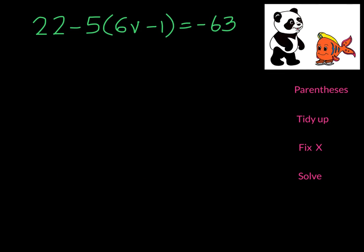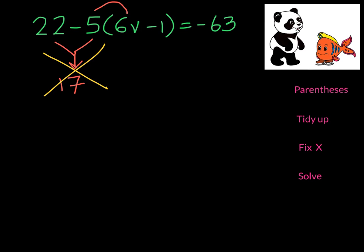This is our next example and we can see a bunch of numbers, parentheses, and negatives. A common error that is often made is that students subtract 22, take away 5, and get 17 — and that is not what we should have done first. The first step is to distribute always. We need to multiply negative 5 times 6v and times negative 1. So we're going to start over and distribute first.